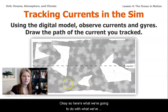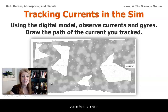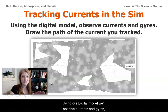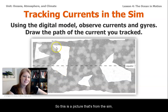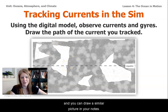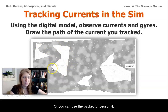Here's what we're going to do with what we've learned. We are going to be tracking currents in the sim. Using our digital model, we'll observe currents and gyres, and then we'll draw the path of the currents that we track. This is a picture from the sim, and you can draw a similar picture in your notes or use the packet for Lesson 4.